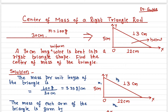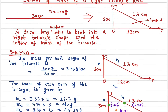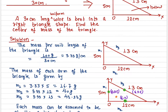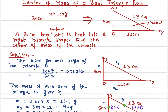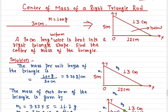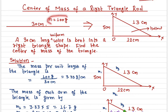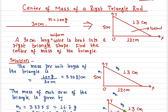In order to find the center of mass, I'll first find out the mass per unit length of the triangle. The total mass is 100 grams and the total length is 30 centimeters, so in one centimeter the mass is 3.33 grams.